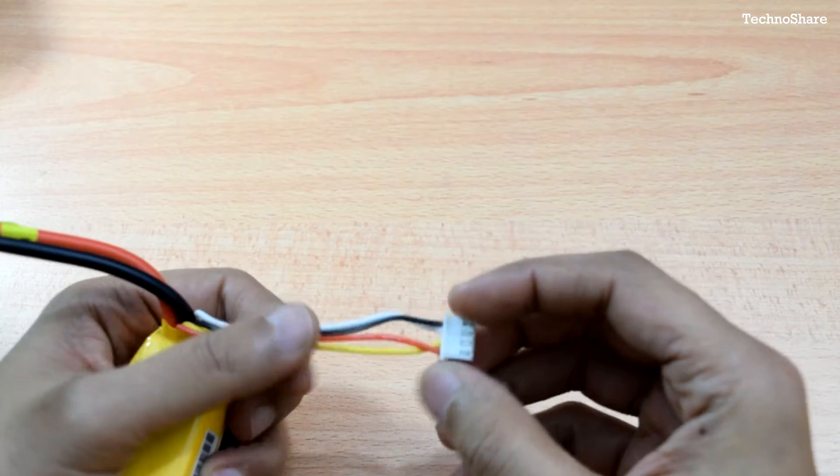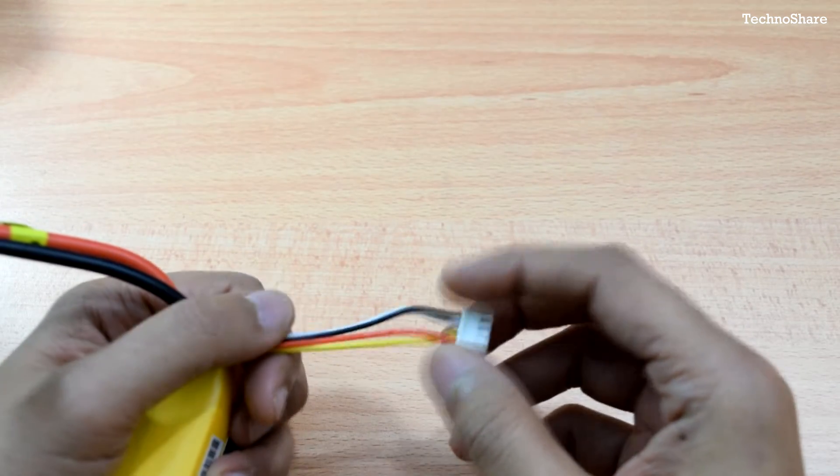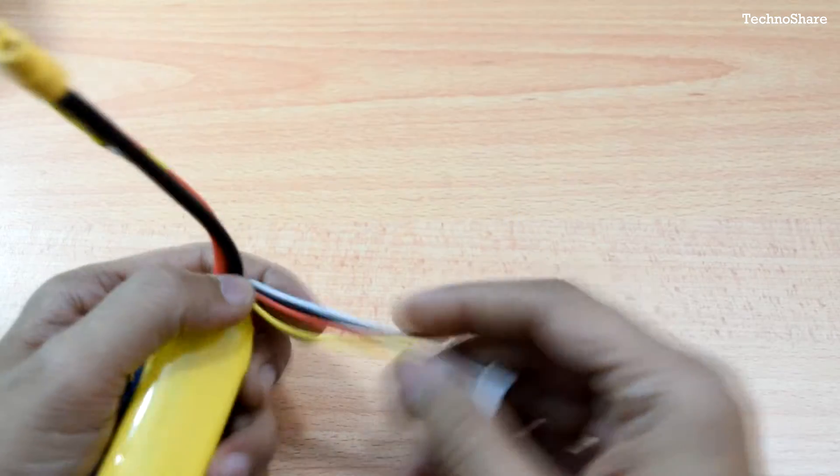So we can have the individual cells monitored by a charger. And also it gets charged evenly when plugged into a balance charger.